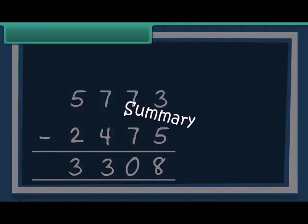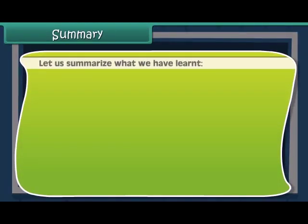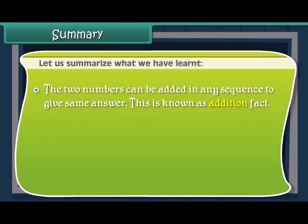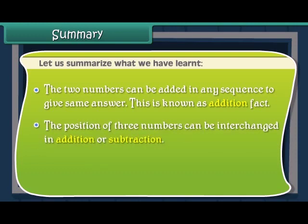Summary. Let us summarize what we have learned. The two numbers can be added in any sequence to give the same answer. This is known as addition fact. The position of three numbers can be interchanged in addition or subtraction. Three numbers have multiple information.